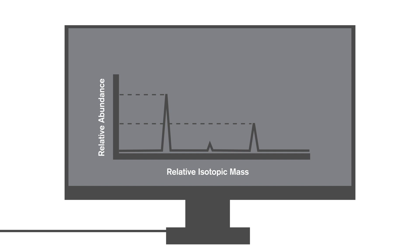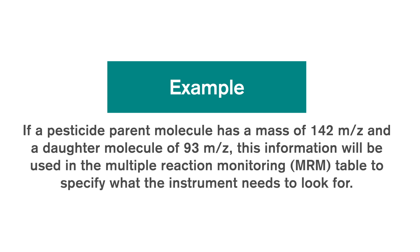For example, using the optimization and tuning experiments, if a pesticide parent molecule has a mass of 142 m/z and a daughter molecule of 93 m/z, this information will be used in the multiple reaction monitoring table to specify what the instrument needs to look for.